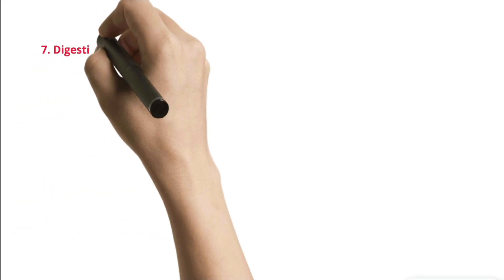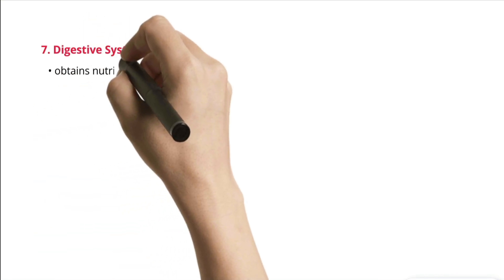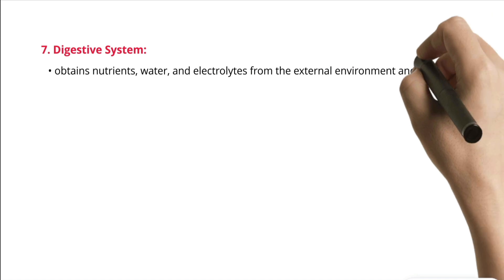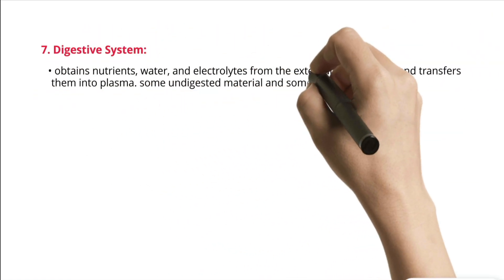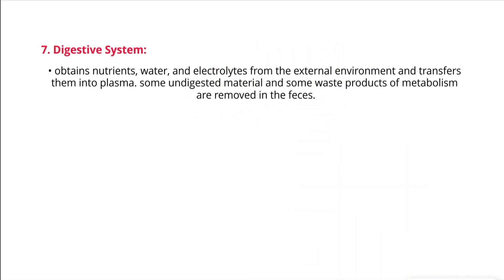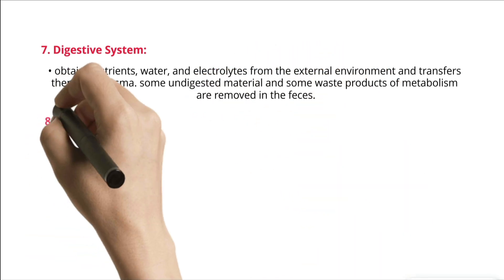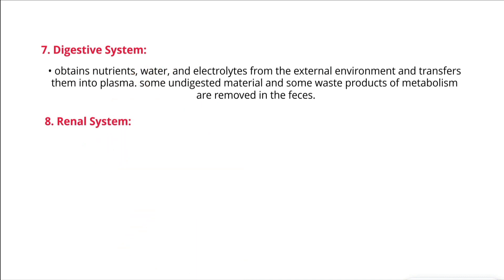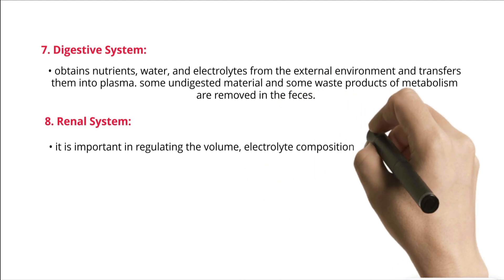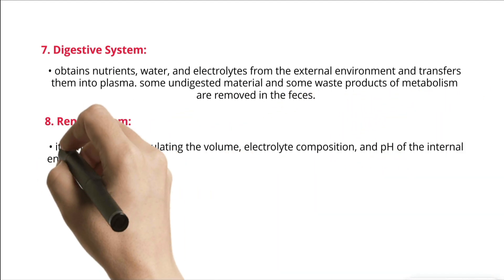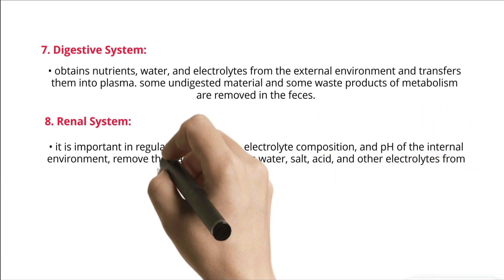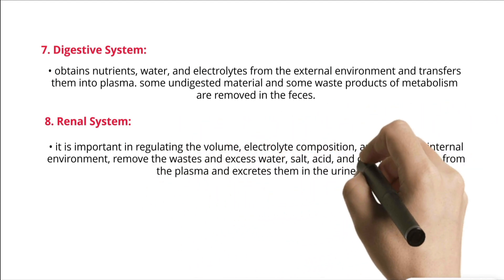7. Digestive system — obtains nutrients, water, and electrolytes from the external environment and transfers them into plasma. Some undigested material and some waste products of metabolism are removed in the feces. 8. Renal system — important in regulating the volume, electrolyte composition, and pH of the internal environment. Removes wastes and excess water, salt, acid, and other electrolytes from the plasma and excretes them in the urine.